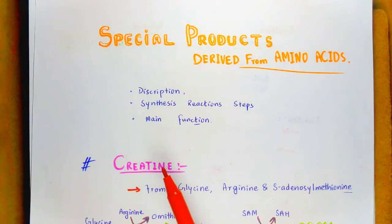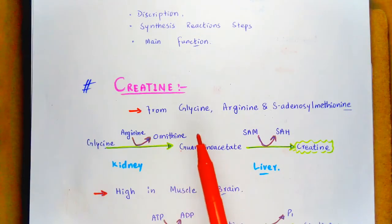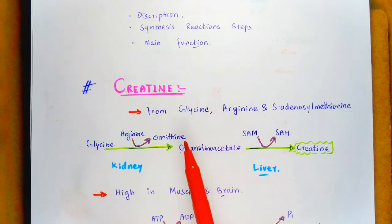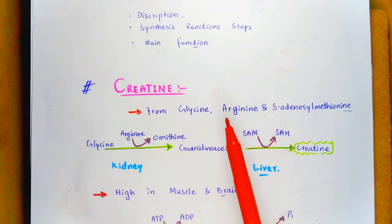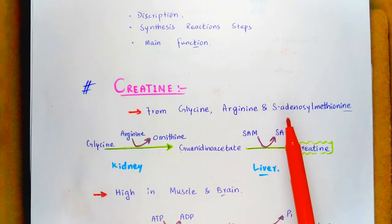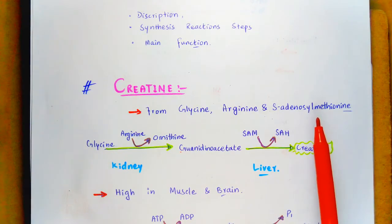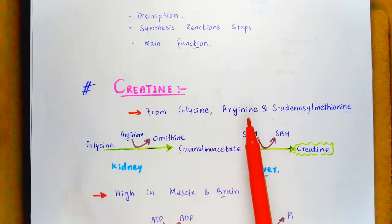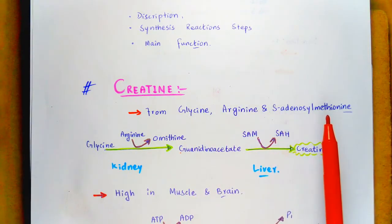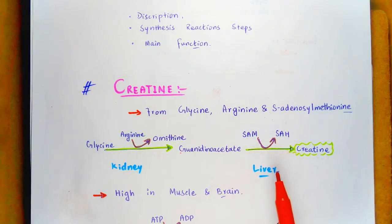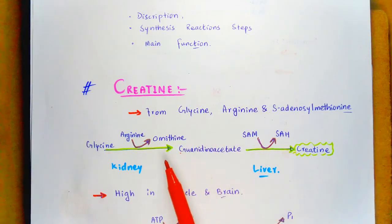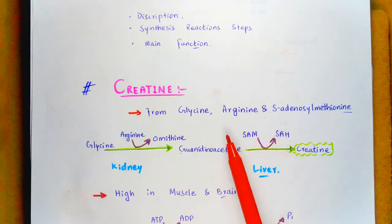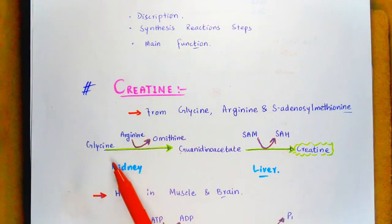Let's start with creatine. Creatine is the compound that is derived from amino acids. Creatine is produced within the liver from glycine, arginine, and S-adenosyl methionine. It is the product that is formed from these amino acids within the liver, so the formation of creatine occurs in the liver.